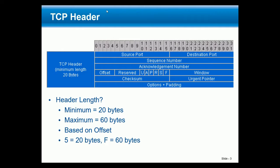The ACK number in the initial SYN will be zero because I haven't received anything from you. So I'm going to set my initial sequence number, set the SYN bit — I'll turn on the SYN bit — and that will tell you I want to synchronize sequence numbers. Hopefully you will ACK me, taking my sequence number plus one, and that will be the ACK number from you.